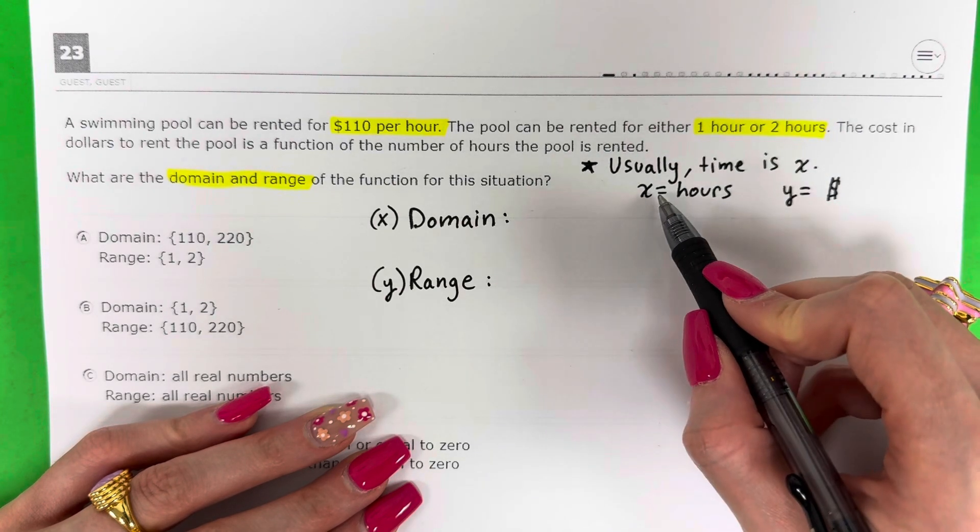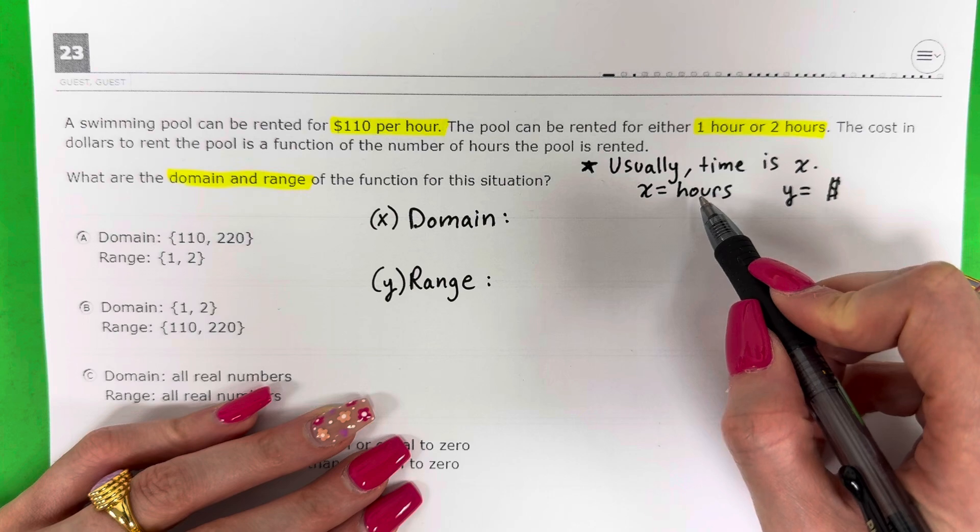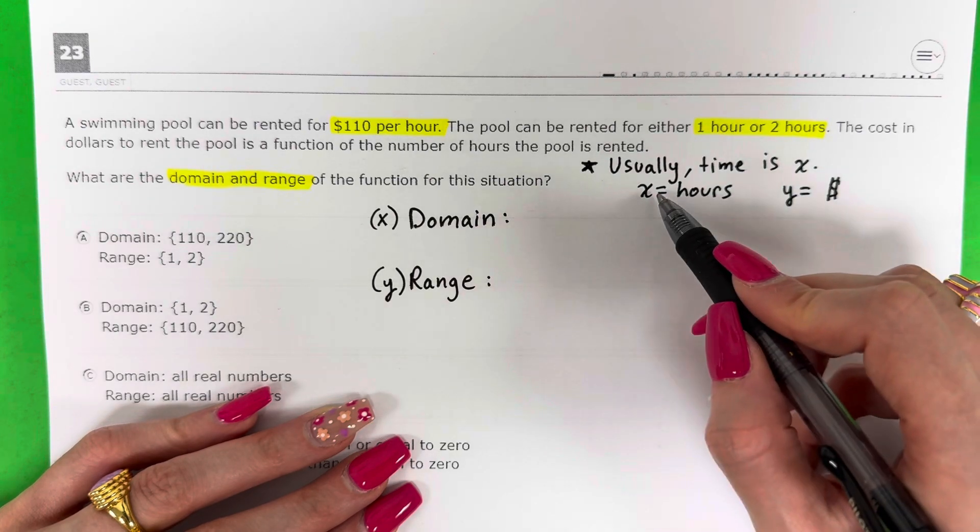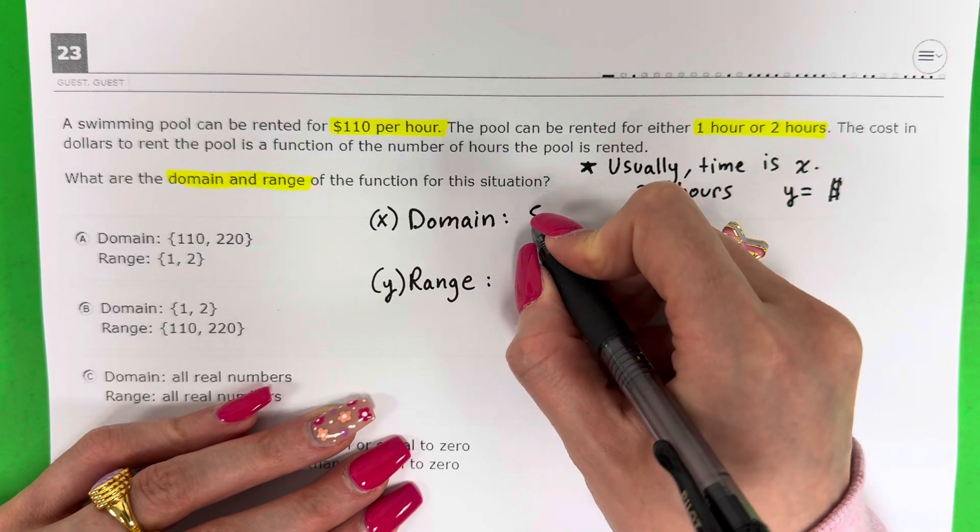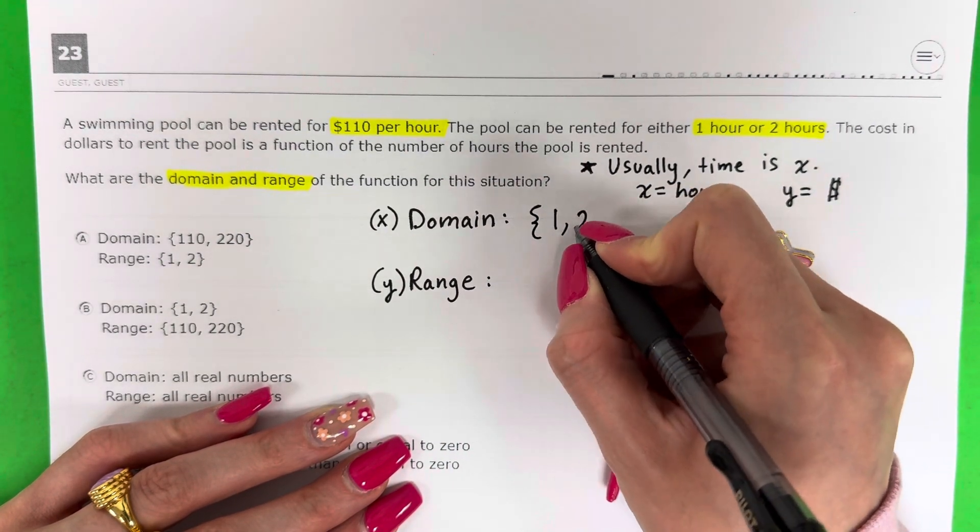So my x is 1 and 2. That's my domain. x is domain and x is 1, 2.